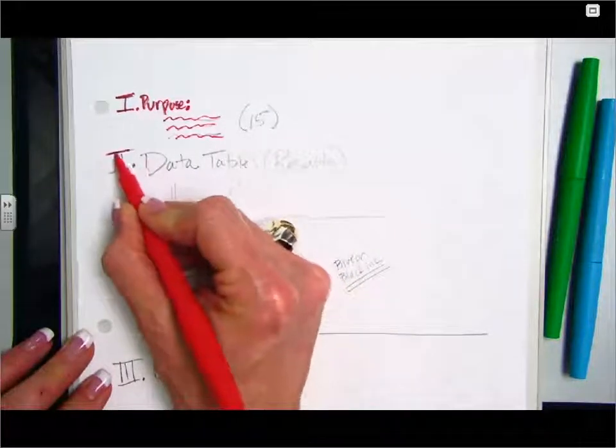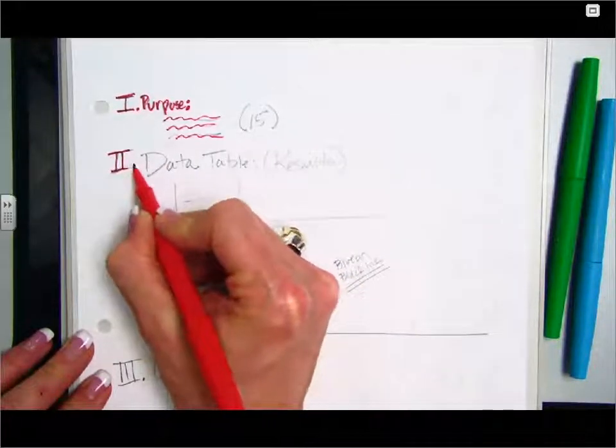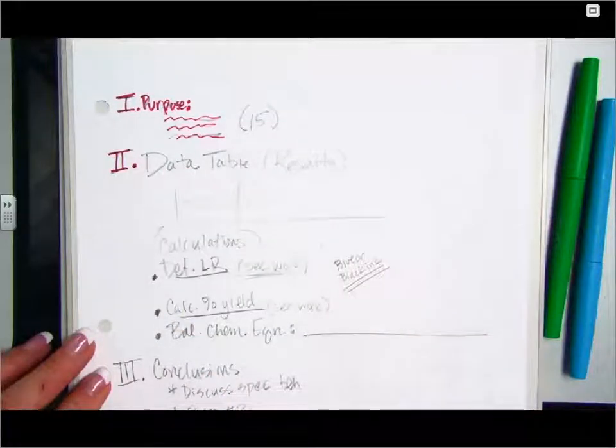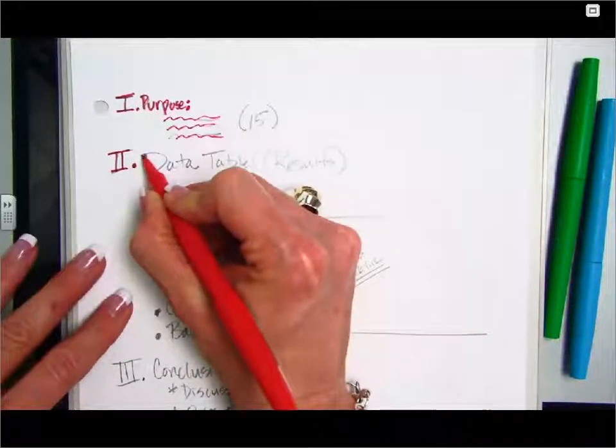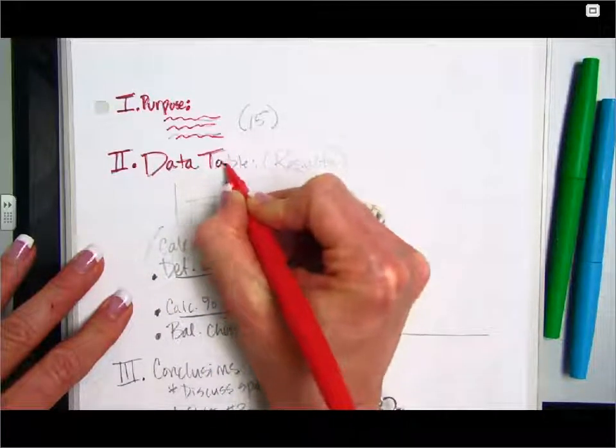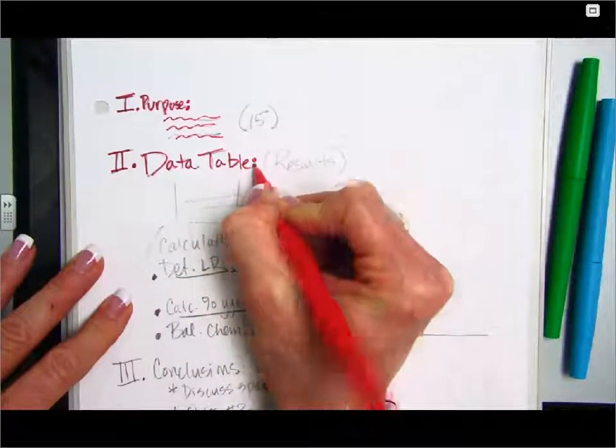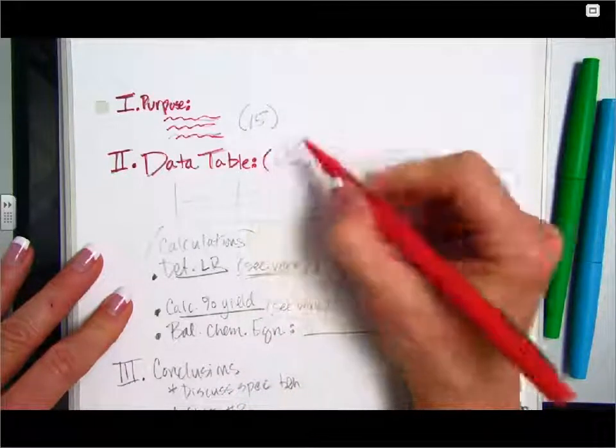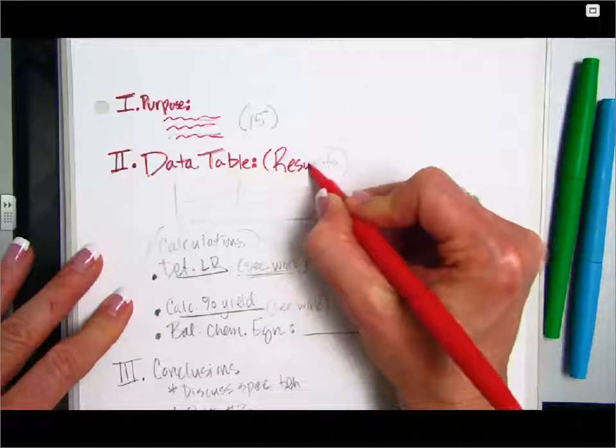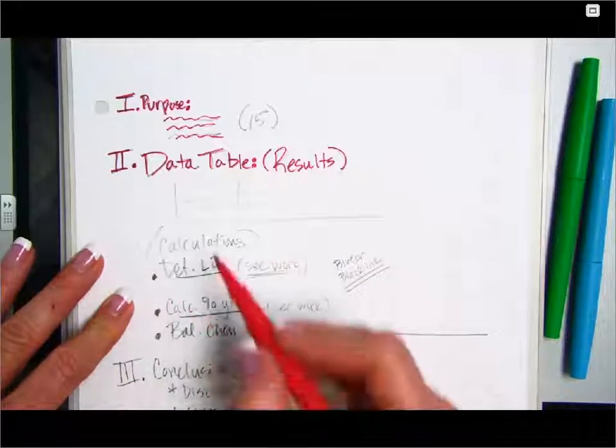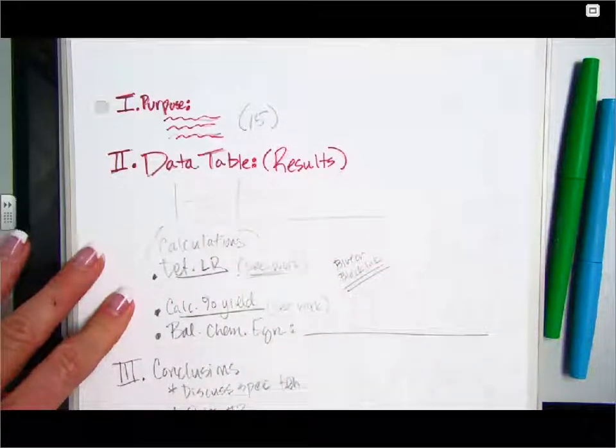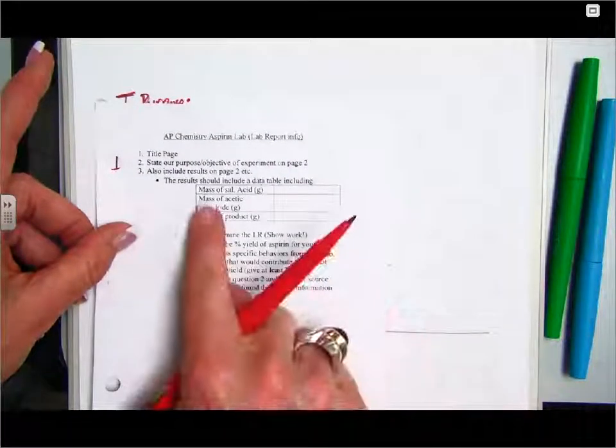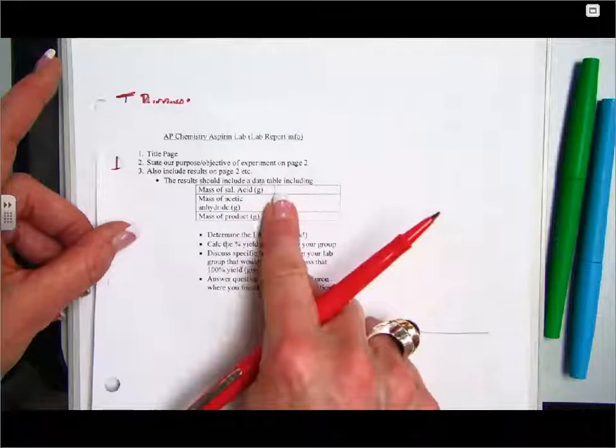Then I would double space between the sections here, put Roman numeral two, and this is where you're going to include your data table. These are the results. So data table results. And then you would of course create your data table. I did give you sort of a format for how the data table should look on the little handout. This would be the format to use for your data table.